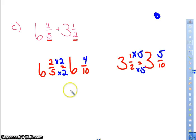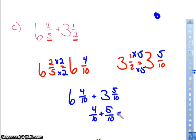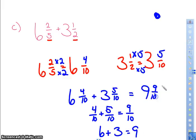So I have 6 4/10 plus 3 5/10. So I'm going to combine my fractions first. 4/10 plus 5/10 is 9/10. Then I have my whole number. 6 plus 3 is 9. So my answer is 9 9/10. That cannot be simplified.